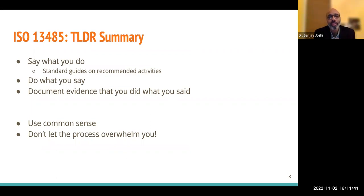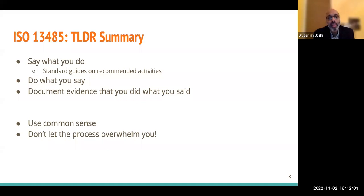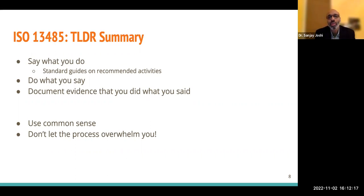If you want to summarize ISO 13485 on one slide, there are only three things to take away. Number one: say what you do — and the standard will tell you everything you need to say. Number two: do what you say — whatever you said, you actually do it. Number three: have evidence that you actually did what you said. It's as simple as that. When you do all this, use common sense — what makes sense for your organization, your people, your product. The ultimate goal is your product, not the quality management system. Do not let the process overwhelm you.